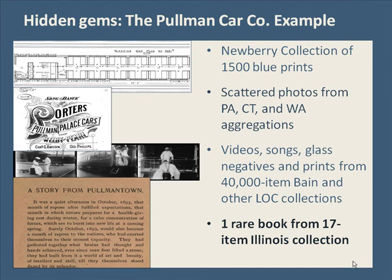Through principles, collection development, and technical choices, the prototype aggregation can support discovery of very large and very small collections alike, sometimes revealing hidden gems. This is a strength of a resource founded on collections of items as opposed to a search engine over an undifferentiated mass of content. Rare yet valuable collections from obscure institutions aren't lost in a sea of bigger fish. In one example, a single rare book from a 17-item Illinois collection complements a comprehensive blueprint collection at the Newberry and scattered resources within large Library of Congress and state aggregations to evoke a compelling history of the historic Pullman Train Car Company.